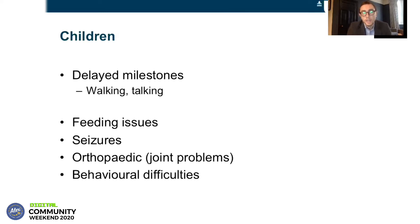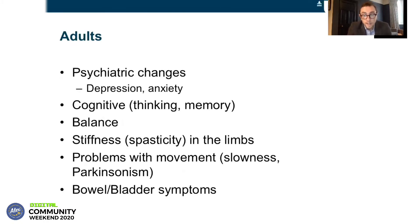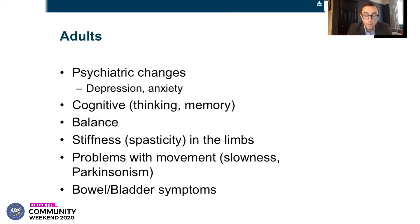In children, we see delayed milestones — delay in walking and talking, feeding issues, seizures, and because the bones, joints, and muscles are developing, sometimes joint problems and behavioural difficulties. In adults, we tend to see psychiatric changes, so depression and anxiety being very frequent early symptoms, as well as very prominent cognitive — thinking and memory — problems. We also see balance problems, which is ataxia, stiffness in the limbs which we call spasticity, problems with movement like slowness which can look a bit like Parkinson's disease — we call that Parkinsonism — and bowel and bladder symptoms quite frequently as well.